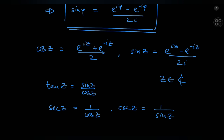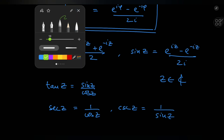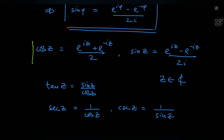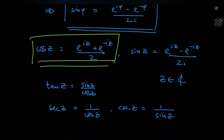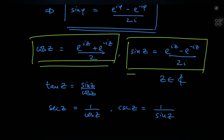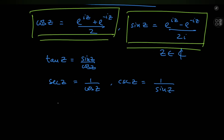Another nice thing here is that you can easily verify using these definitions that the trigonometric identities we know all hold in the complex realm too. For example, you can verify that sine squared z plus cosine squared z equals 1 for all complex numbers using the definitions we have. And that is of course left as a little exercise for the viewer.